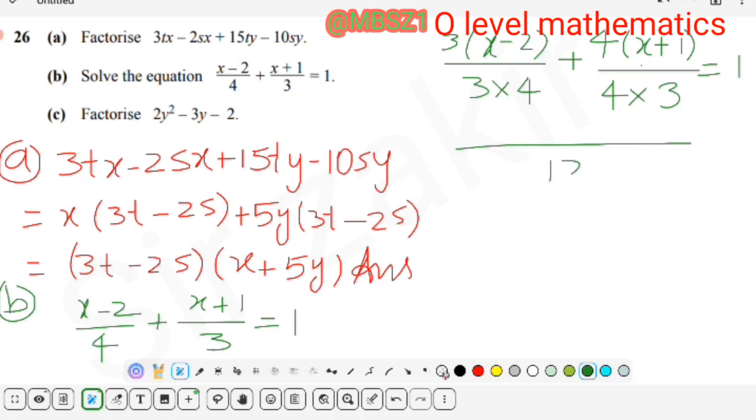We multiply 3 with X, it becomes 3X. Minus 3 multiply by 2 is 6. Plus 4 multiply by X is 4X. 4 multiply by 1 is 4. Equal to 1. 12 will be shifted to the other side. 3X + 4X makes 7X.